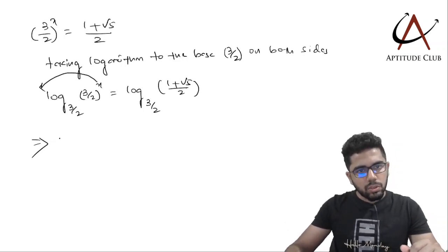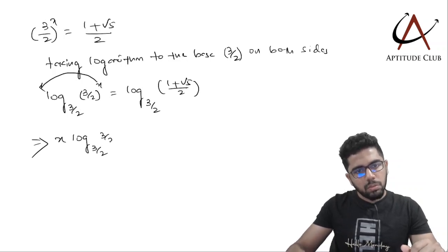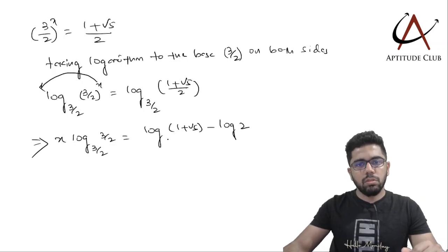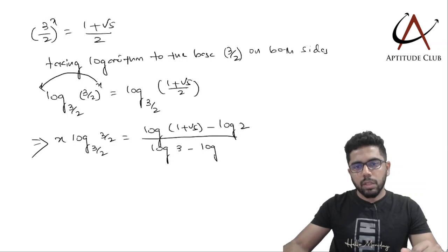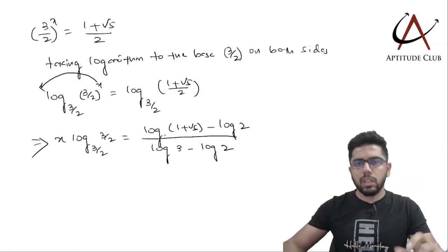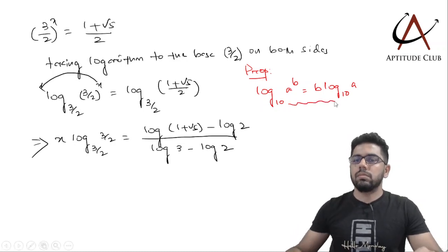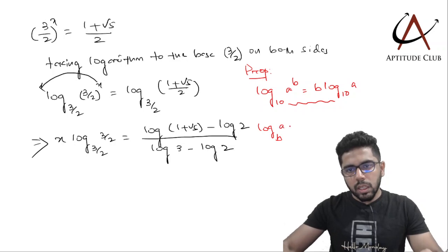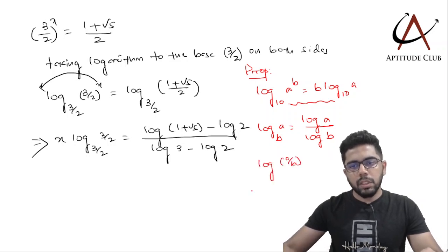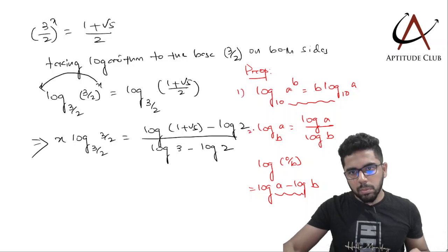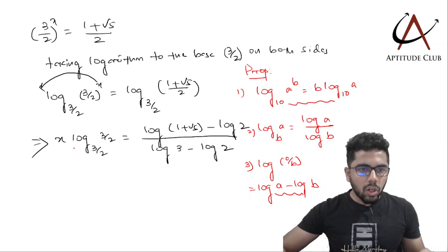Using the property of logarithms, x comes out in front: x times log base (3/2) of (3/2) equals log(1 + √5) minus log 2, all divided by log 3 minus log 2. Note that log base (3/2) of (3/2) equals 1. The properties used here are: (1) log(a^b) = b·log(a); (2) log_b(a) = log(a)/log(b); and (3) log(a/b) = log(a) − log(b).